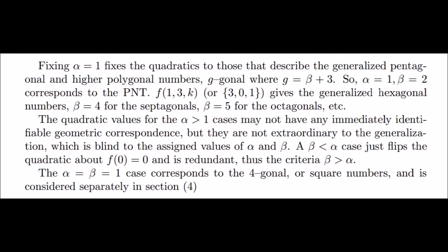I did not note this in the original episode, but fixing alpha equals 1 fixes the whole generalization to the cases where the corresponding quadratics are the ones that give the gigonal numbers. For pentagonal and greater, when we get to square numbers, that's excluded for the time being.